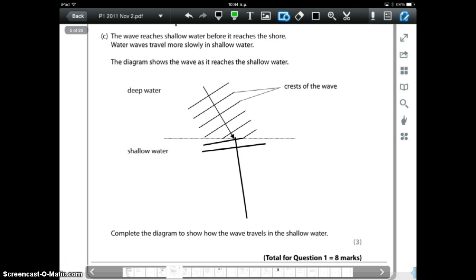But basically we should end up with wave fronts which are closer together. Decreasing speed means decrease in wavelength. And they must be perpendicular still to the new wave direction.